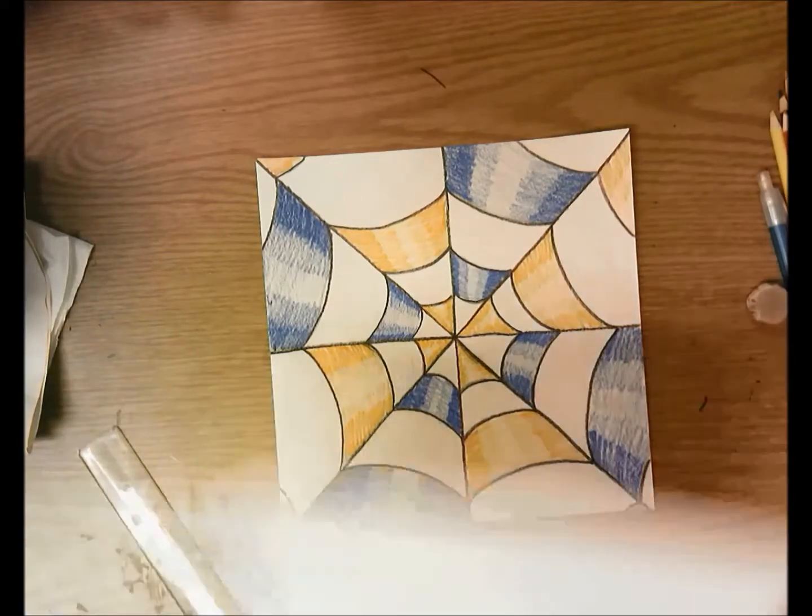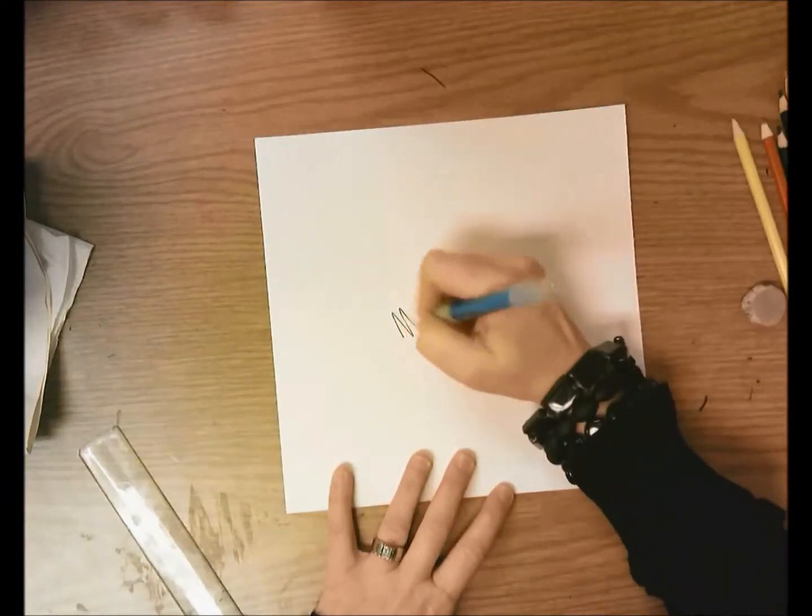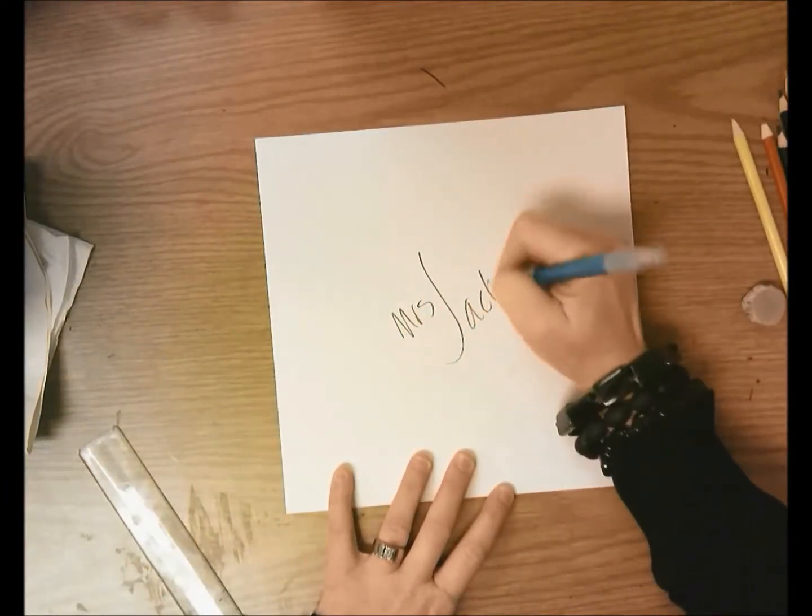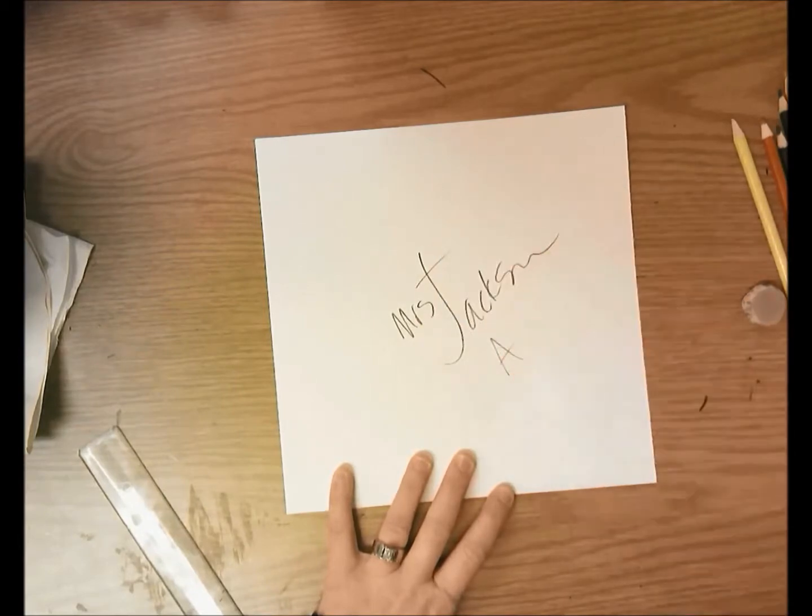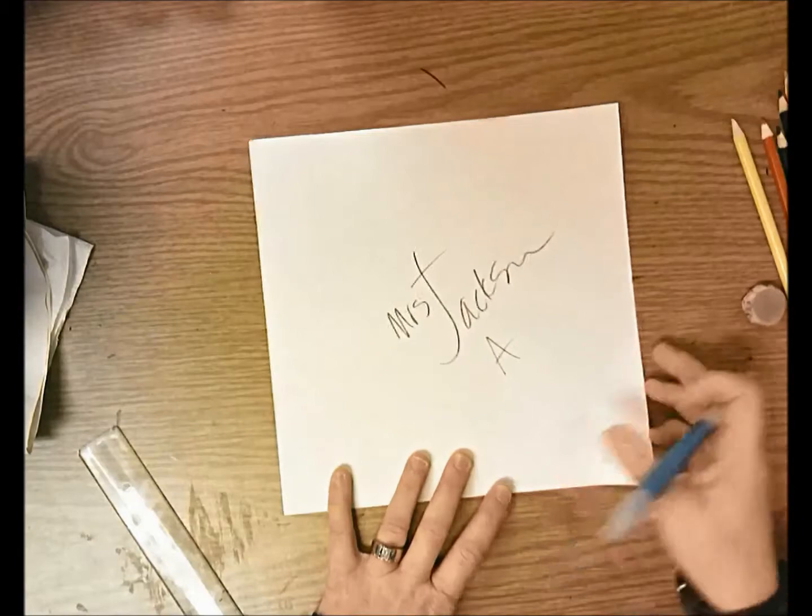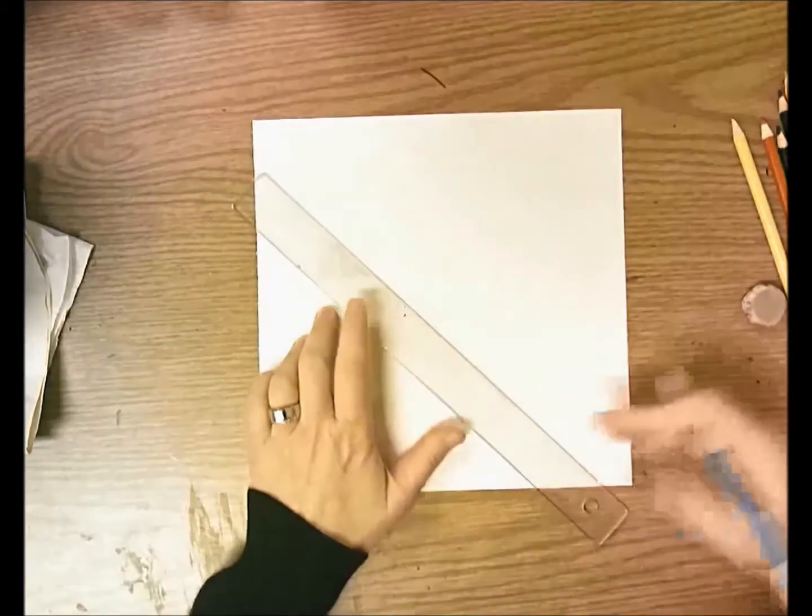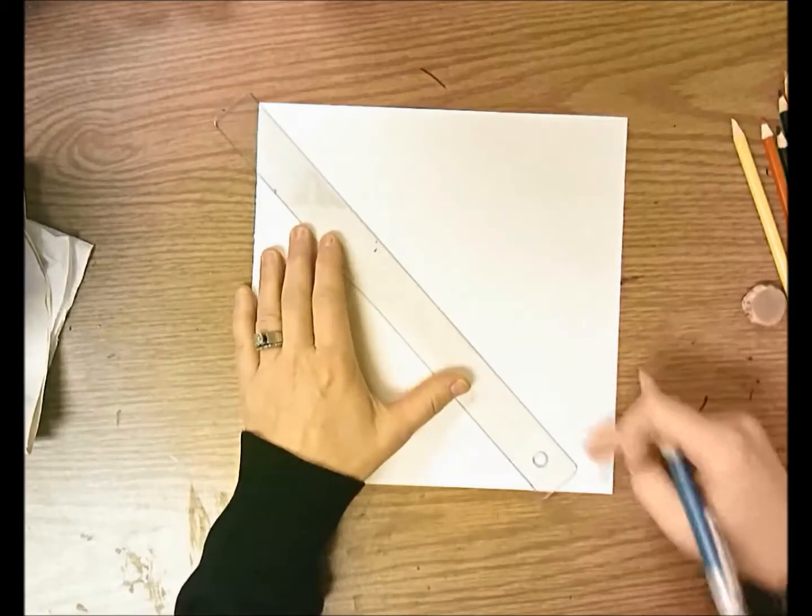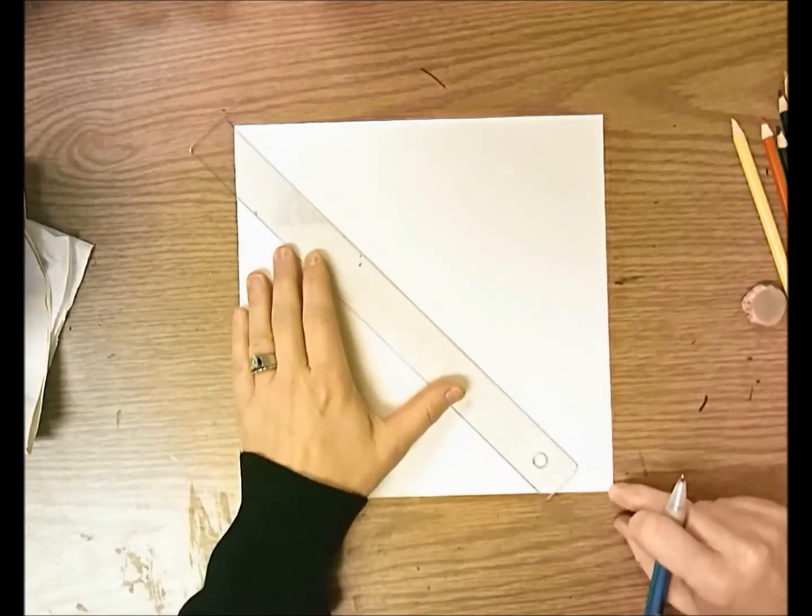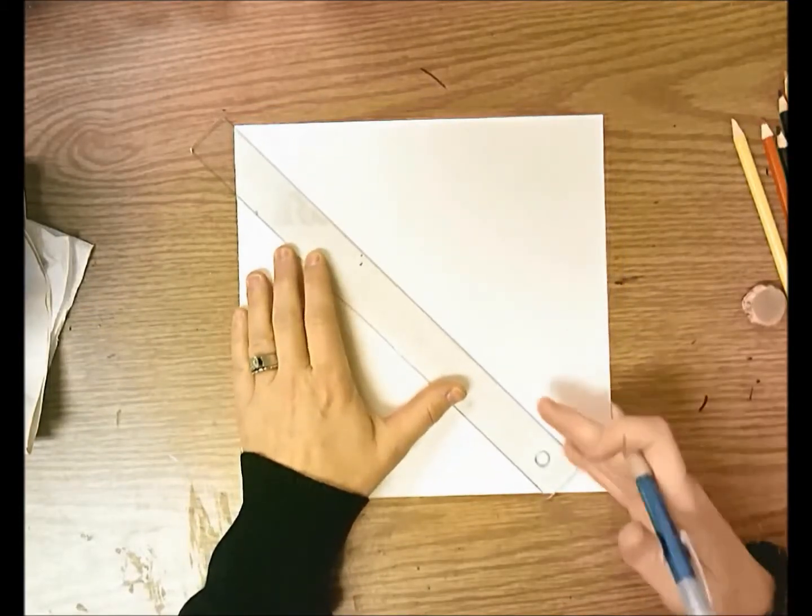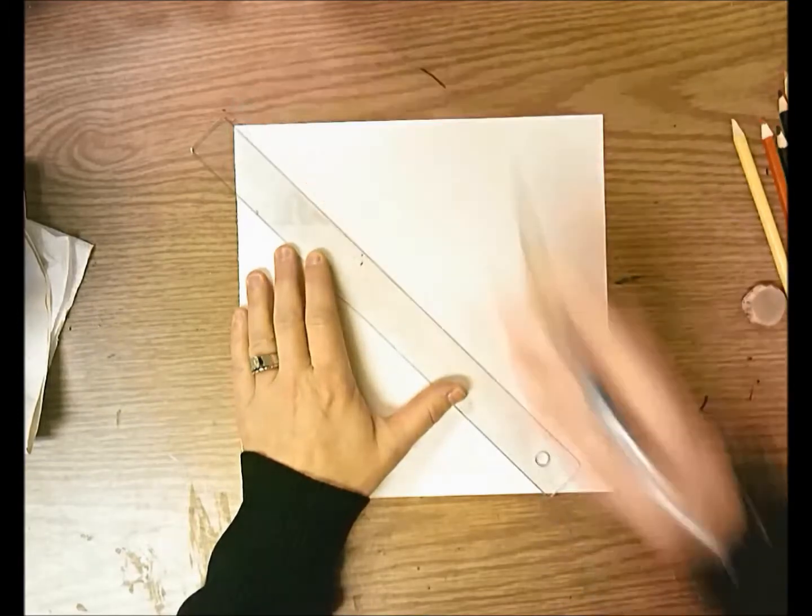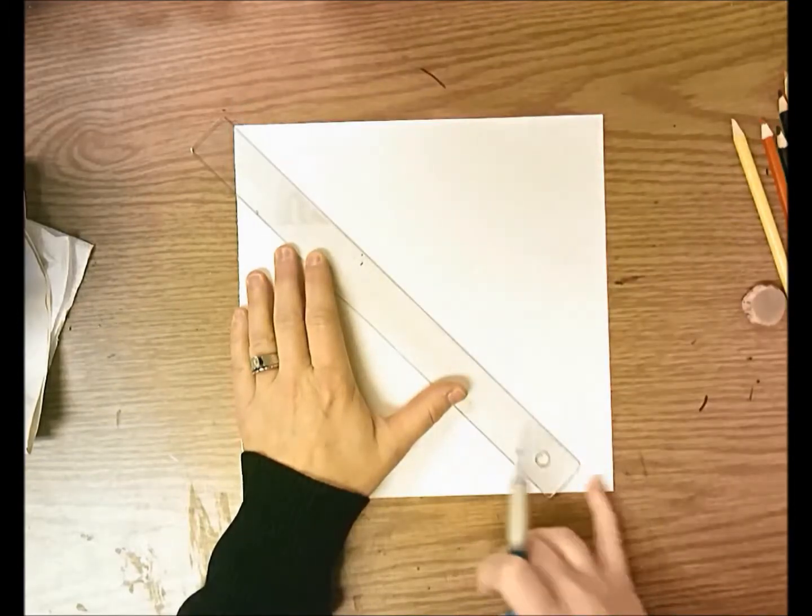So the way that we start this is you're going to get a square piece of paper. You need to write your name and the day you have art, day A, day B, day C. You're going to flip it over and the first thing you're going to do is create an X on your paper using a ruler. So your ruler is not going to reach all the way to the other edge of your paper, so you just need to kind of eyeball it, try to imagine if you continue this line on where it would go.